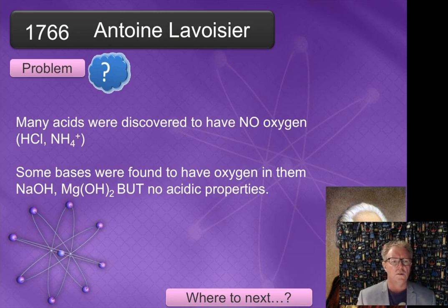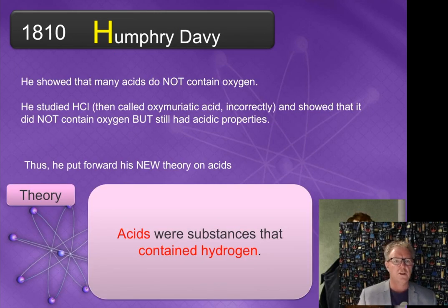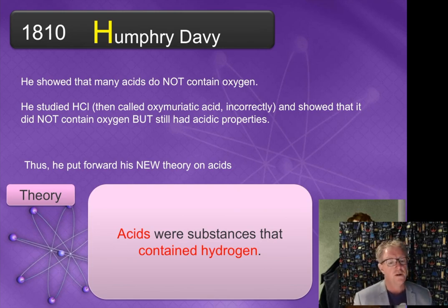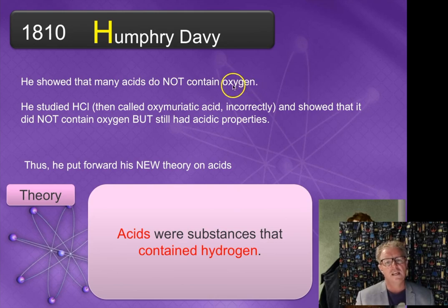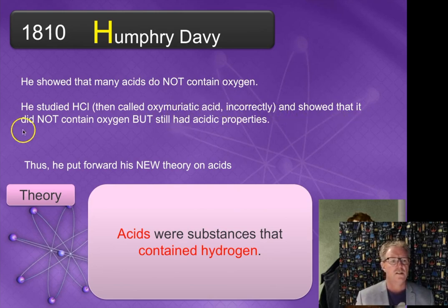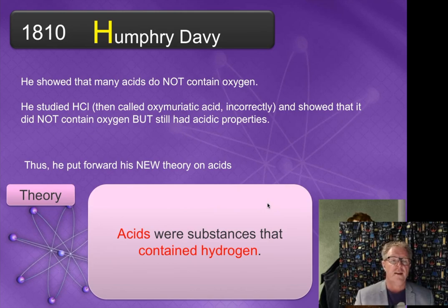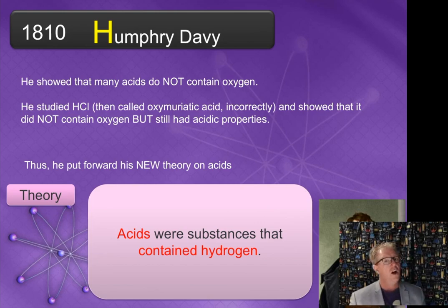Next we have Humphrey Davy. Notice the capital H in his name because, surprise surprise, he said acids were those that contain hydrogen. He showed that many acids do not contain oxygen by studying hydrochloric acid — back then called oxymuriatic acid — and showed that it did not contain oxygen but still had acidic properties. So he said we've got evidence that acids do not have oxygen, and we need to update our theory. Acids contain hydrogen.